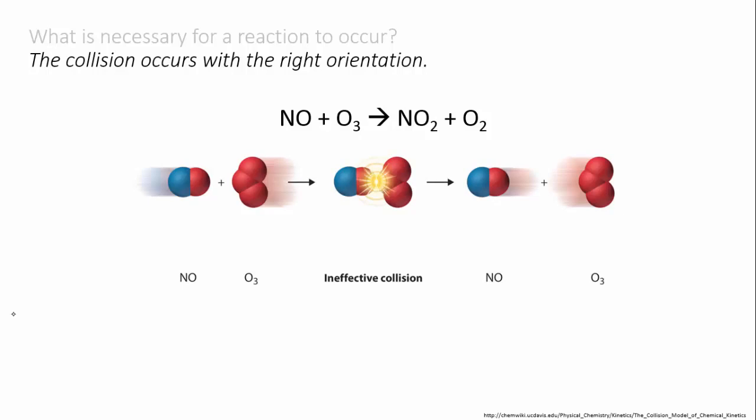In this first example the oxygen of the NO bumps into the ozone but these two oxygens can't make a bond so the molecules bounce off each other and continue on unchanged.